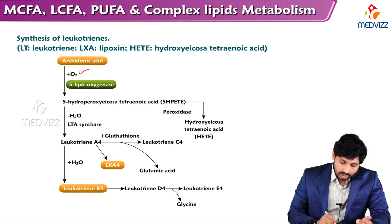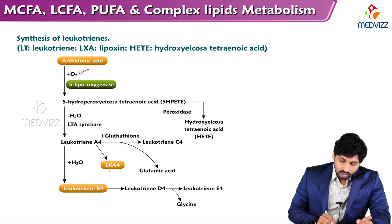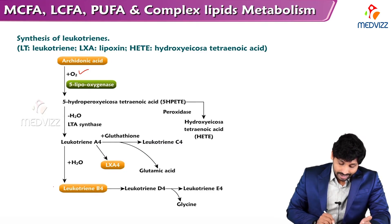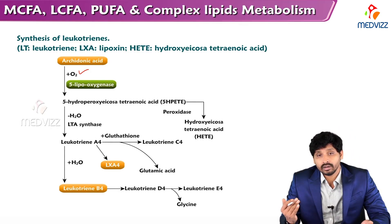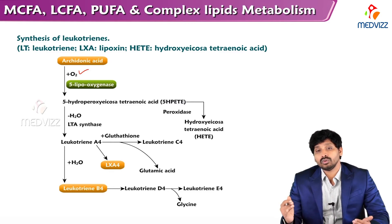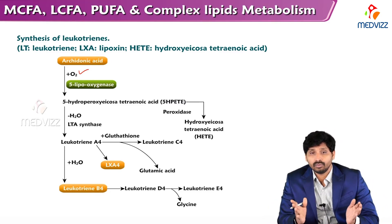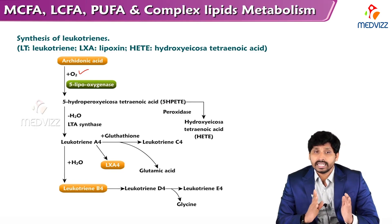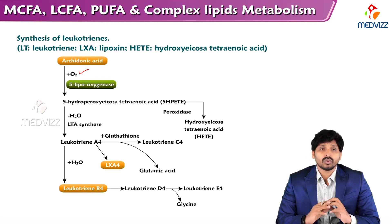From 5-HPETE, one pathway leads to leukotriene A4. Glutathione then comes into action and converts leukotriene A4 to leukotriene C4, and LXA4 is also produced. By removing glutamic acid, leukotriene C4 is converted to leukotriene D4, and with a water molecule leukotriene A4 is converted to leukotriene B4. Leukotriene D4 then converts to leukotriene E4 — the difference between LTD4 and LTE4 is a glycine molecule, while between LTA4 and LTC4 it is a glutamic acid molecule.